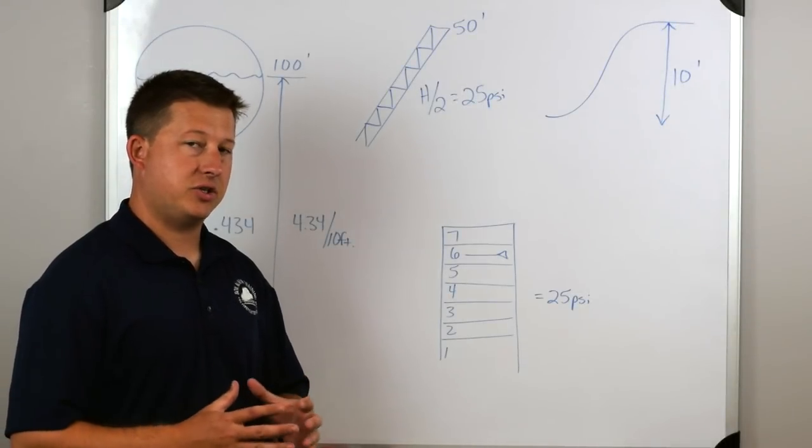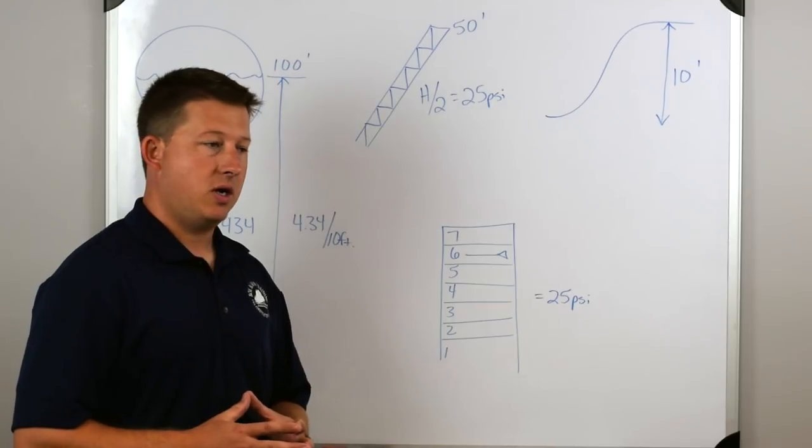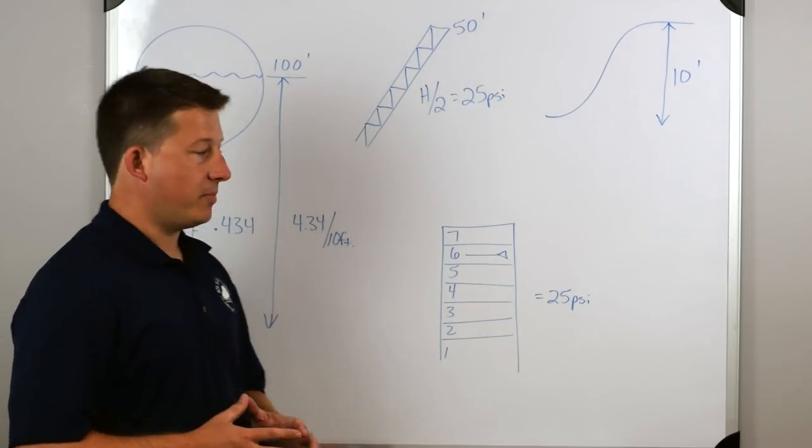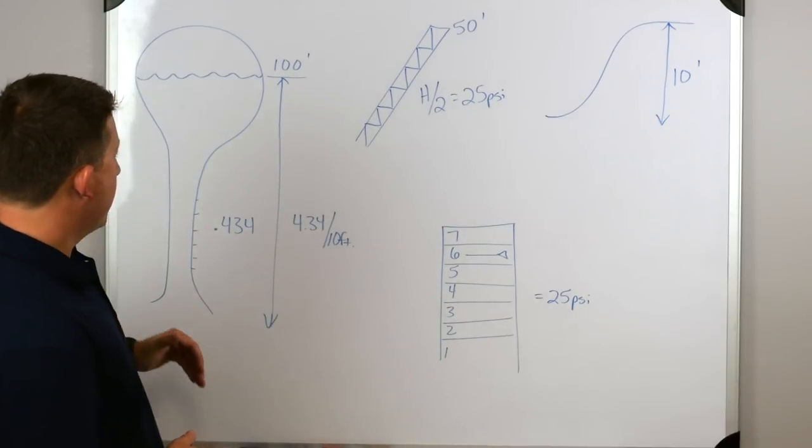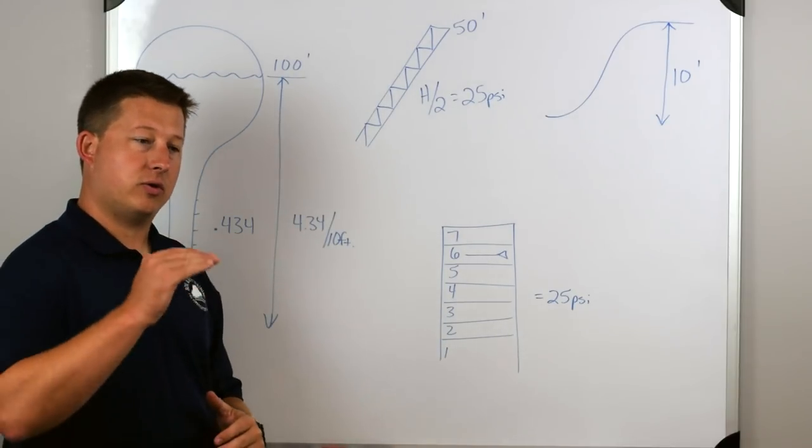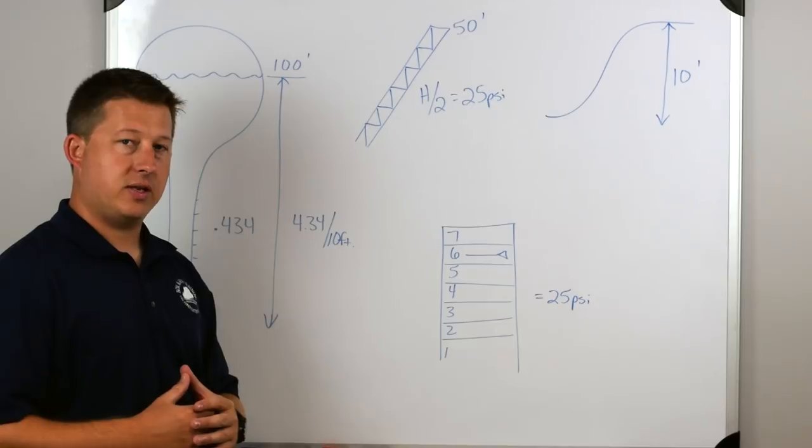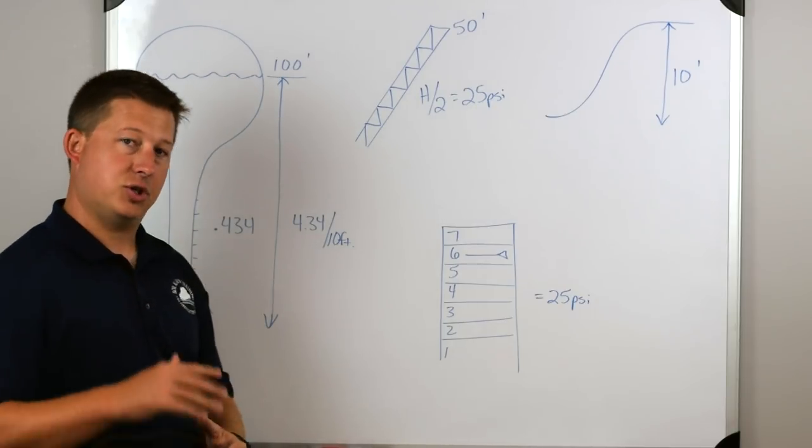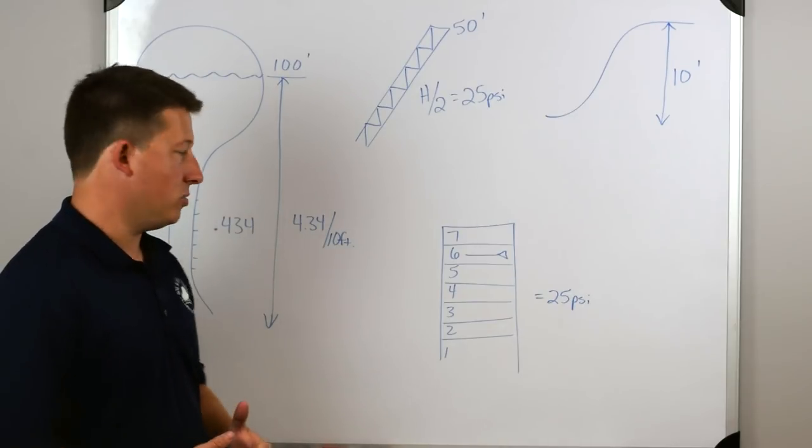The next thing that we're going to look at is the elevation pressure gain or loss and where does elevation pressure gain or loss come from? Well, the easiest example of that is to look at a water tower. In this example, the water tower has the level of the water at 100 feet in the air. So we're looking at a column of water, and that water being at 100 feet generates pressure at the bottom for us to use.